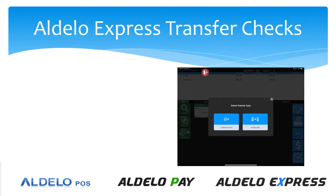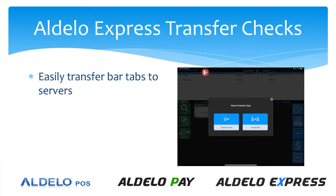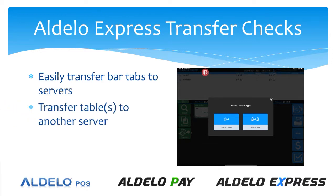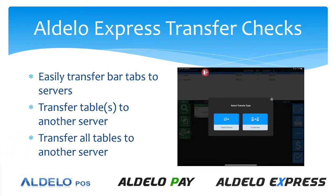Adelo Express allows you to transfer bar tabs or guest checks from one server or bartender to another. This makes it really easy to have bar tabs transferred to a server in the restaurant from the bar. You can also transfer tables to another server, such as if a server is going on break and needs someone to manage their tables while they're gone, or if the server is going home for the evening, you can simply transfer all their tables to another server.